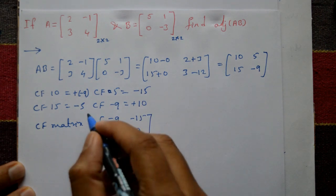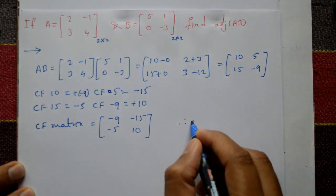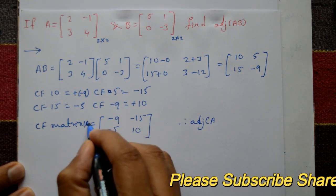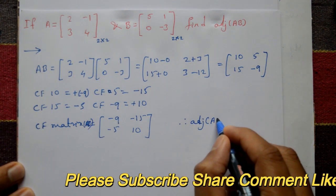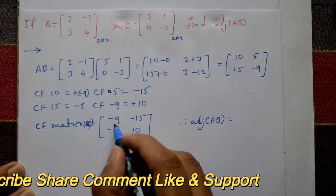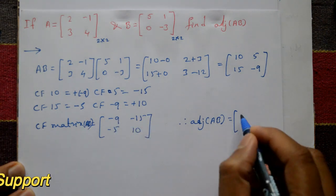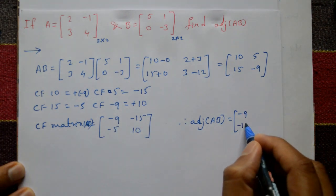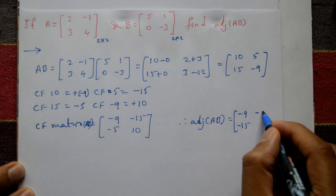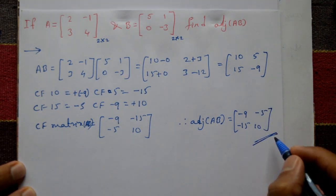Now, adjoint of AB is obtained by transposing the co-factor matrix — just exchanging rows into columns. The first row minus 9, minus 15 becomes the first column, and second row minus 5 and 10 becomes the second column. This is the required adjoint of AB.